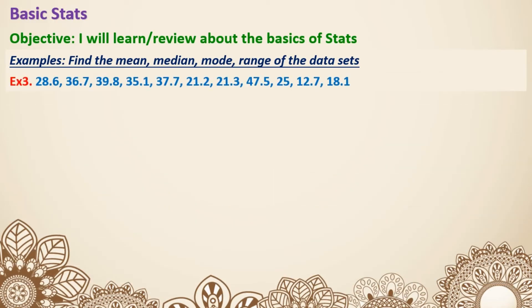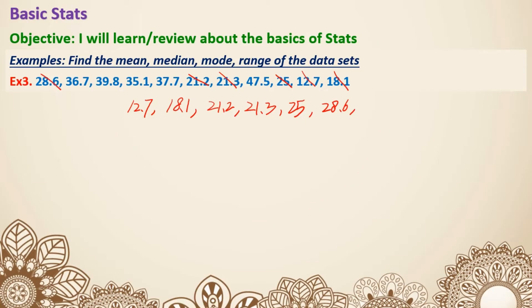Example three: same idea, but this time we have decimals. We still need to put all the numbers in order. The smallest is 12.7, then 18.1, 21.2, 21.3, 25, 28.6, 35.1, 36.7, 37.7, 39.8, and lastly 47.5. That's 11 numbers again.